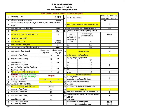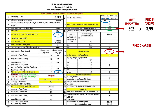We now look at the commercial part of the bill. Since energy has been exported to the power utility grid, the DISCOM has to pay the consumer a certain amount — in this case, rupees 1205. This is calculated on the net export of 302 units multiplied by the feed-in tariff of rupees 3.99 per unit. However, the consumer must pay a fixed charge of rupees 340 — that is rupees 60 for the first kilowatt and rupees 70 for the remaining 4 kilowatt of the contracted load of 5 kilowatt.